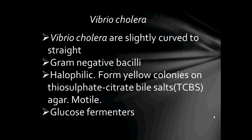TCBS, or thiosulfate citrate bile salt agar, is a selective agar plate used to isolate Vibrio species. TCBS contains high concentrations of sodium thiosulfate, which is important to inhibit the growth of enterobacteria, as well as a mixture of bile salts — oxgall and sodium cholate, which is a pure bile salt. Vibrio cholerae are also glucose fermenters.